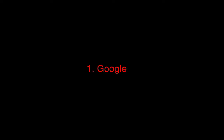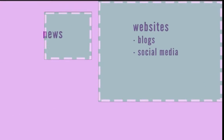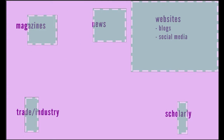The first searching option to talk about is Google, because Google tends to be the place that most of us think to start any kind of search for any kind of information — because Google searches everything, doesn't it? But actually, Google primarily searches websites, but it is also able to find some news sources, some magazine sources, some trade and industry publications, and a few scholarly sources.